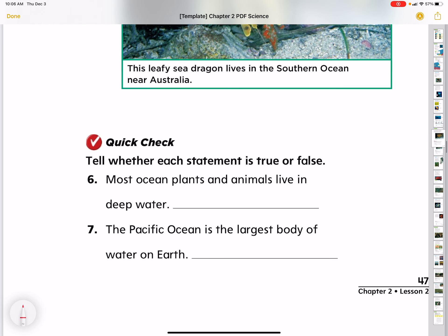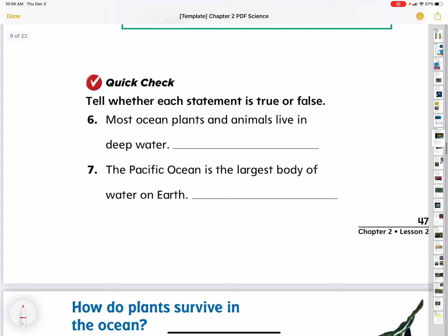Tell whether each statement is true or false. Most ocean plants and animals live in deep water. We know that is false because they like to live where it's warm near the sunlight and it's too dark and cold.